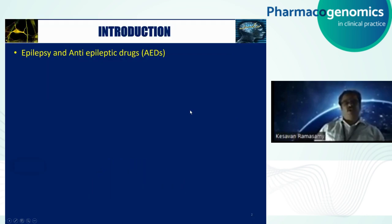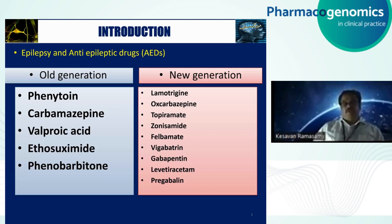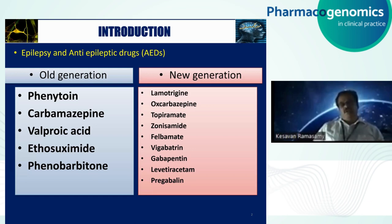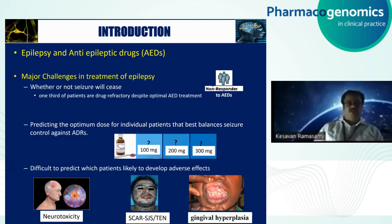Epilepsy is a common neurological disorder, and anti-epilepsy drugs are the mainstay of treatment. Very few drugs were available in the last few years, but now there are a lot of new drugs available. But in spite of the availability of these new generation drugs, we are facing challenges in the treatment of epilepsy. There are three challenges shown here in the slide.